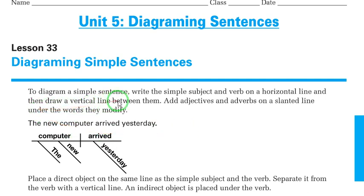Now to diagram a simple sentence, write the simple subject and verb on a horizontal line. As you can see, the simple subject: the new computer arrived yesterday. Where's the simple subject? Computer.